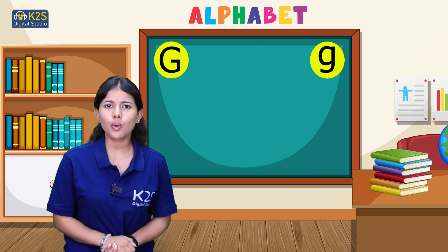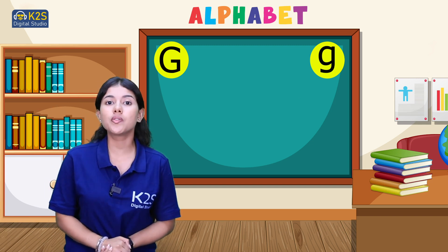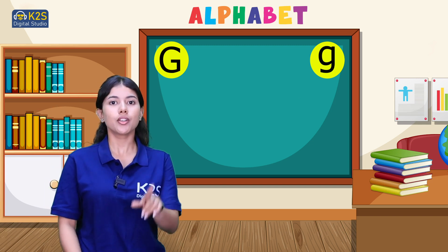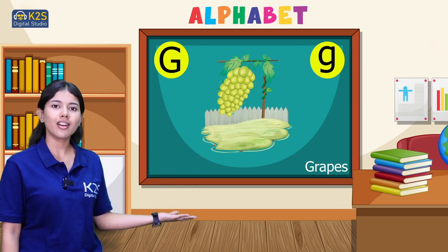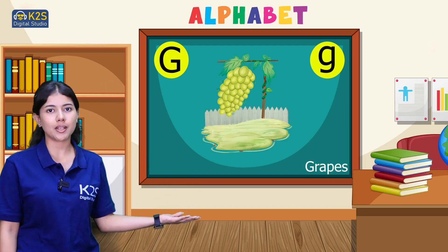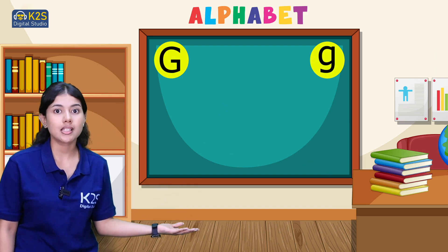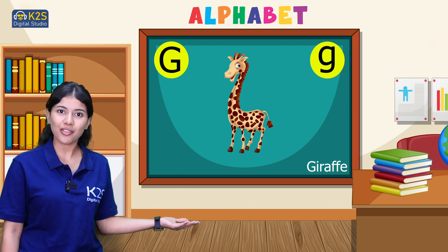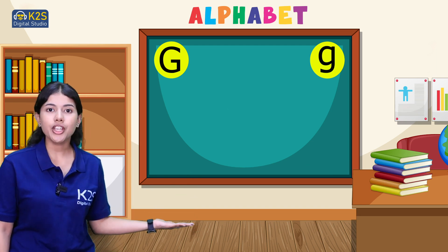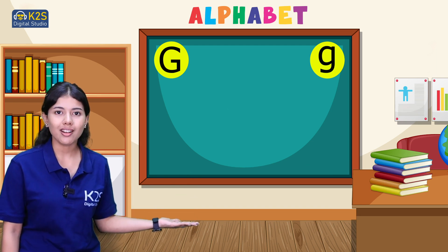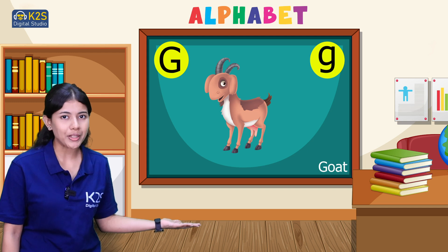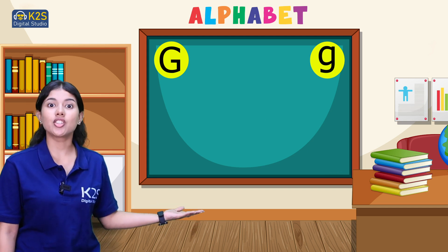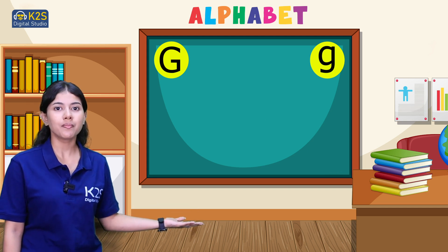Now let's quickly revise the words we have talked about today. First, G for grapes. Second, G for giraffe. Third, G for goat. And the fourth is G for guitar.